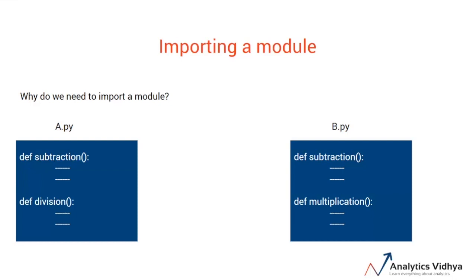This is solved by importing the b.py module and using its subtraction. This way, Python would know that it needs to execute the subtraction function inside the b.py file and not inside the a.py file.